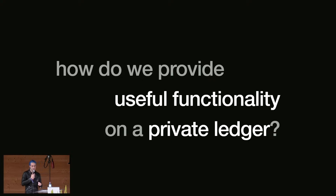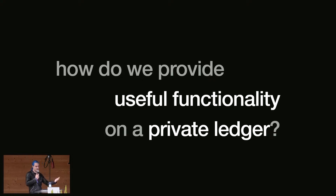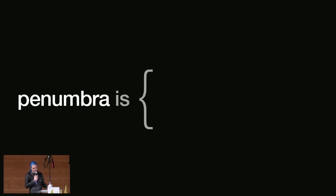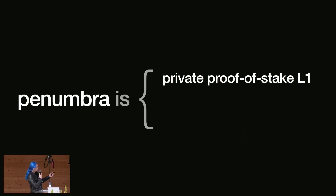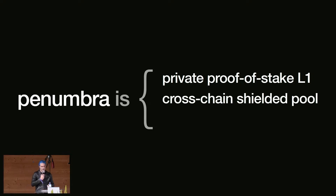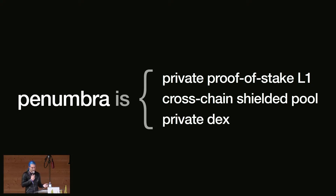You can potentially move from building a privacy product to building something that is better because it is private. What we're building is a private proof-of-stake L1 with a cross-chain shielded pool that can record any type of asset, and an integrated private DEX.